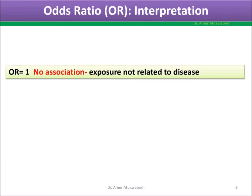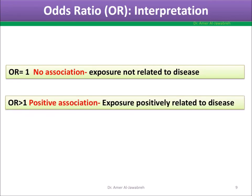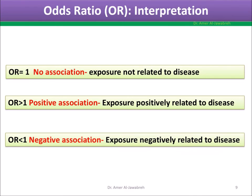Interpretation of odds ratio: If OR equals 1, there is no association between exposure and disease. If greater than 1, there is a positive association. If less than 1, there is a negative association between exposure and disease.